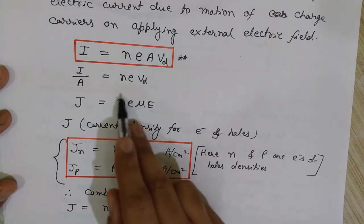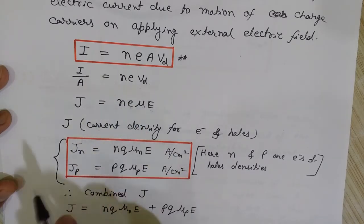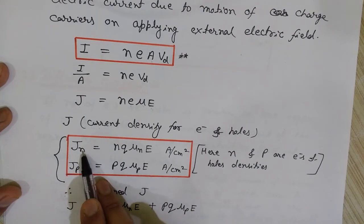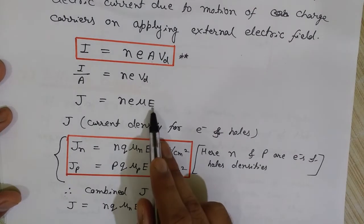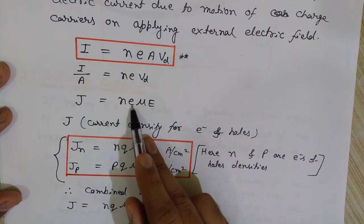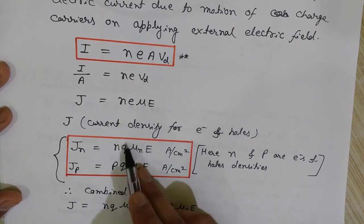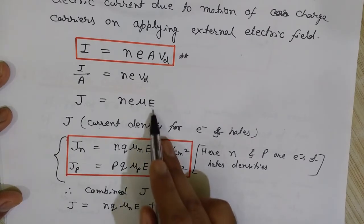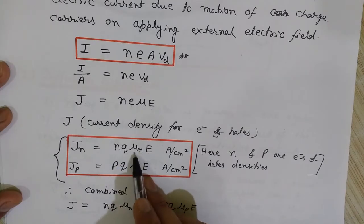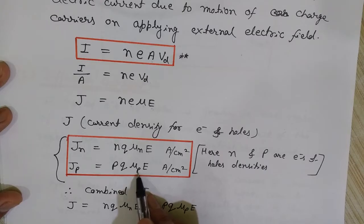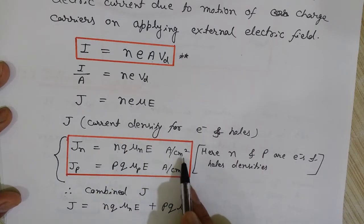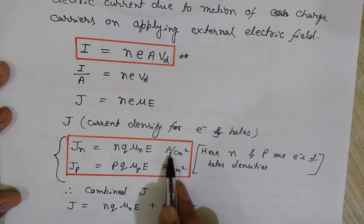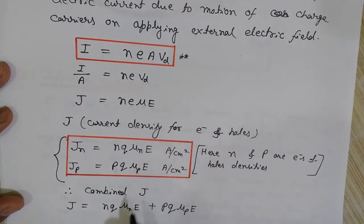For separate current densities: Jn denotes current density for electrons and Jp for holes. The charge q and electric field E are the same for both. But N and μ are different — μn for electron mobility, μp for hole mobility — and n and p are the separate concentrations of electrons and holes in the semiconductor. The unit is ampere per centimeter squared, since it is current density (I divided by A).